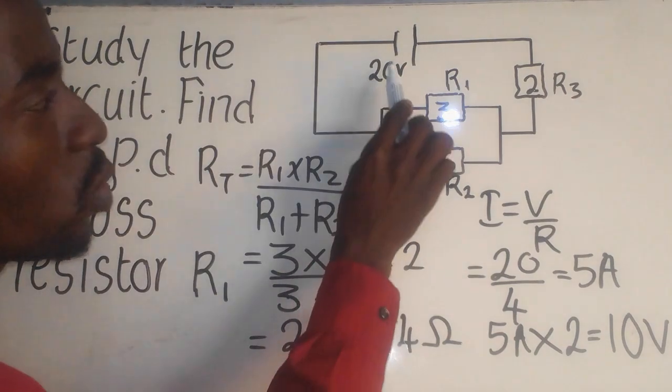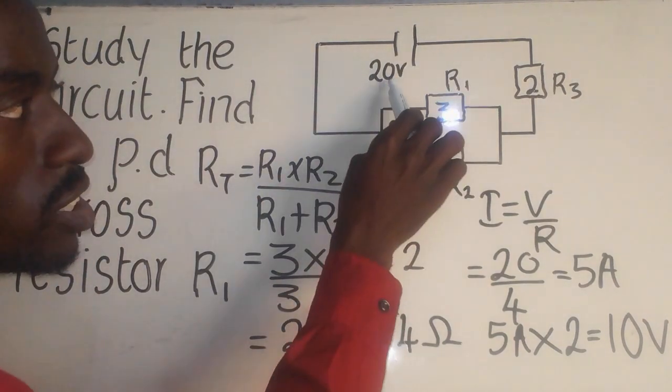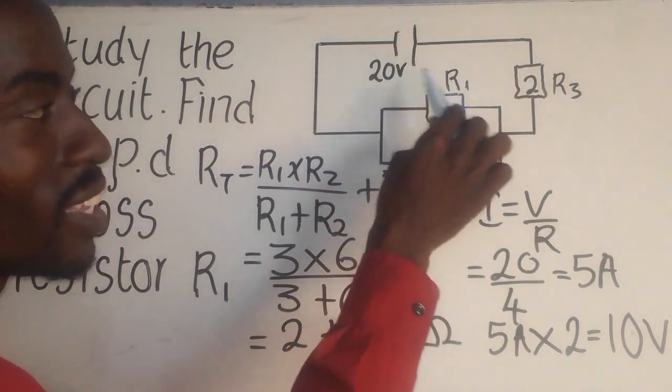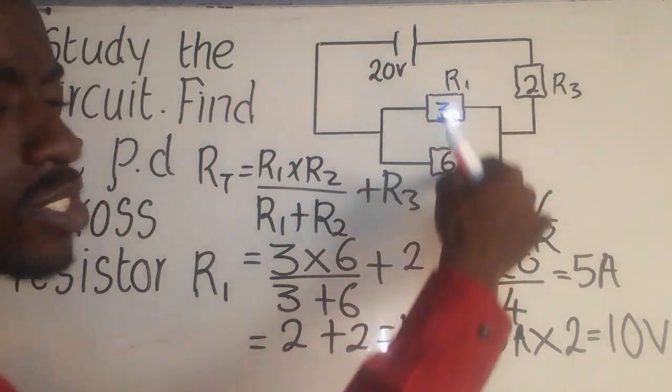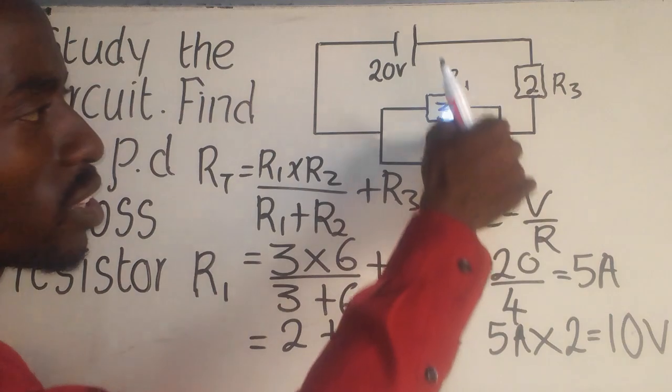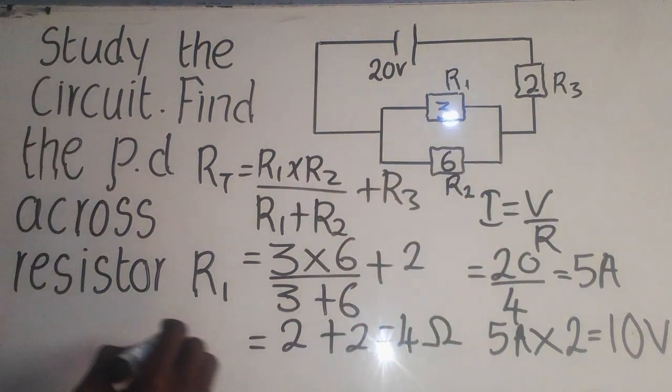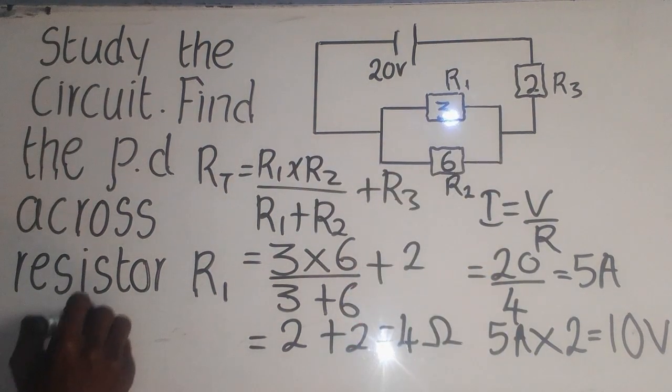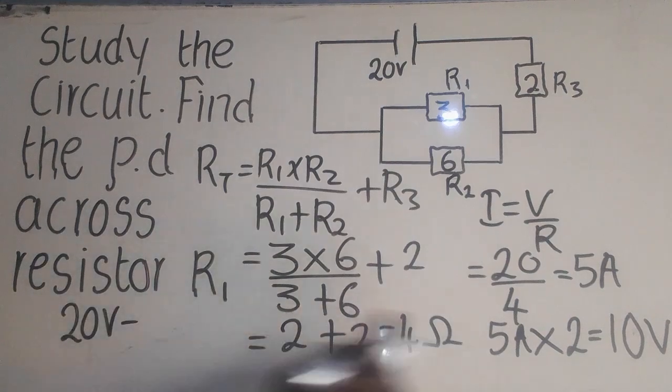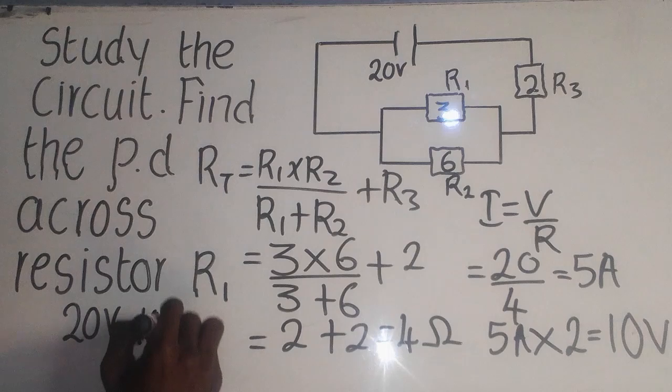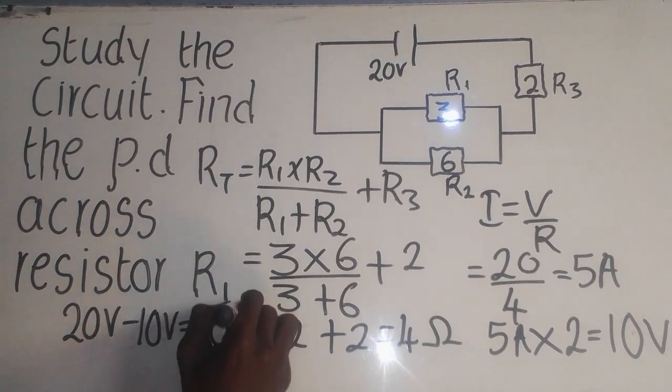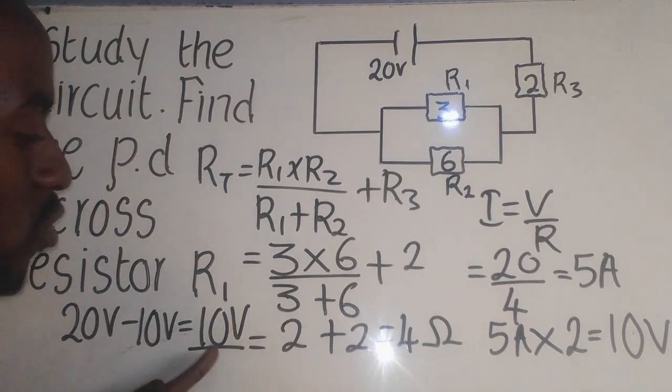Now, since we know that the total voltage in the circuit is 20, out of 20, we have said this 10, it is for R3. Now, how about for these 2 here? For us to find it for these 2, we need to subtract. So, it will be now 20, which is the total minus 10 for this one here. So, which will give me 10 voltage. This 10 voltage, it is the one which is for R1 and for R2.